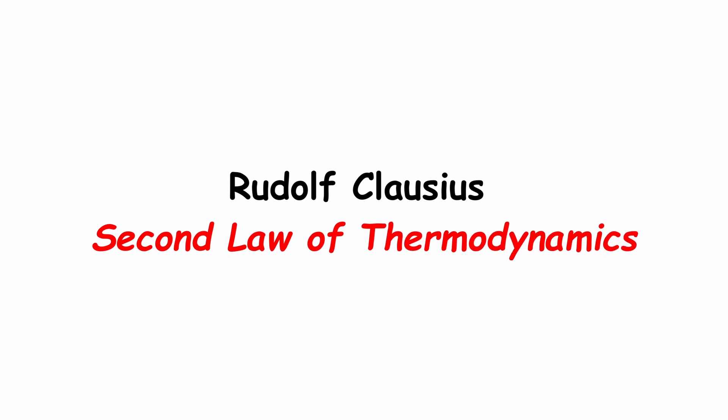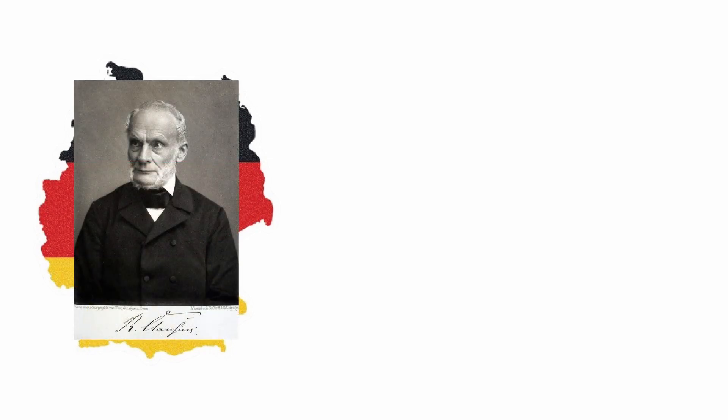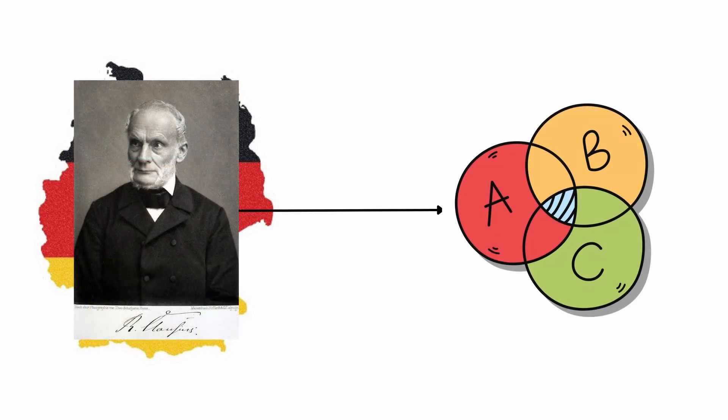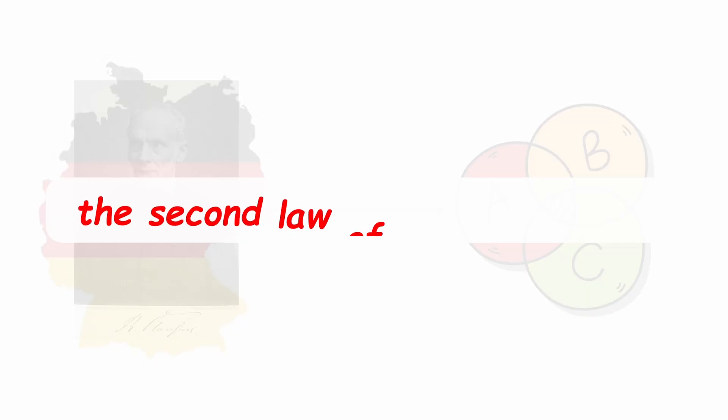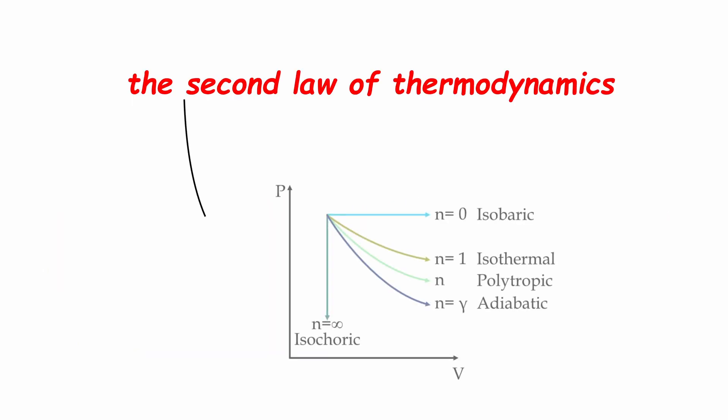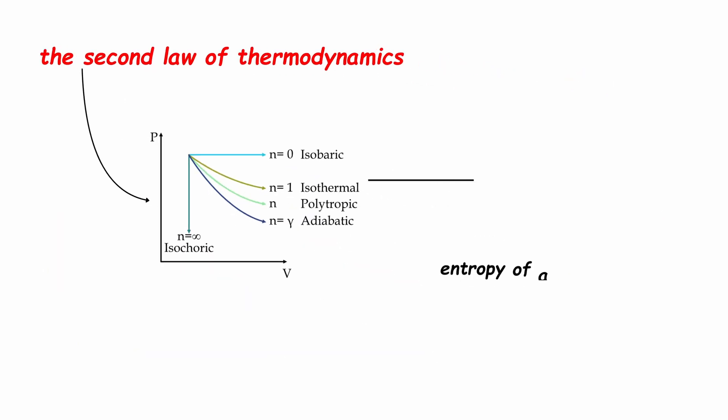Rudolf Clausius – Second Law of Thermodynamics. In 1850, German physicist Rudolf Clausius formulated one of the most important principles of physics, the second law of thermodynamics. This law describes the natural direction of thermodynamic processes and states that the entropy of a closed system always tends to increase.